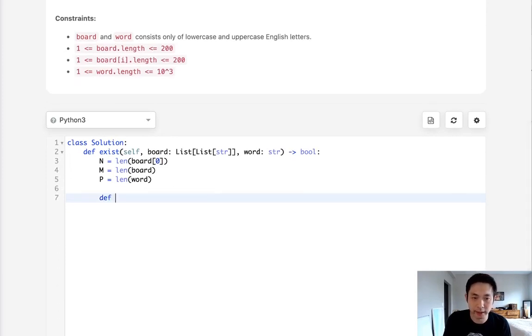Next we want to write a helper method. What I'll do is pass in the row and column as well as the current position we're at for this word. For now I'm just going to write pass, we'll write that later.